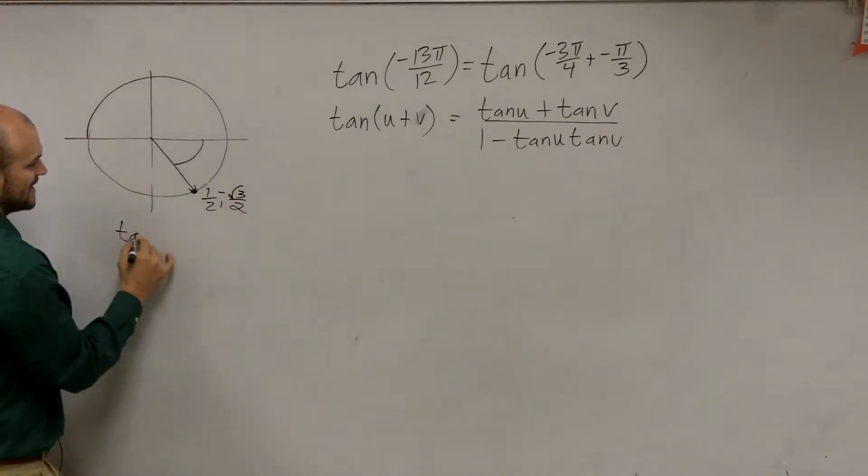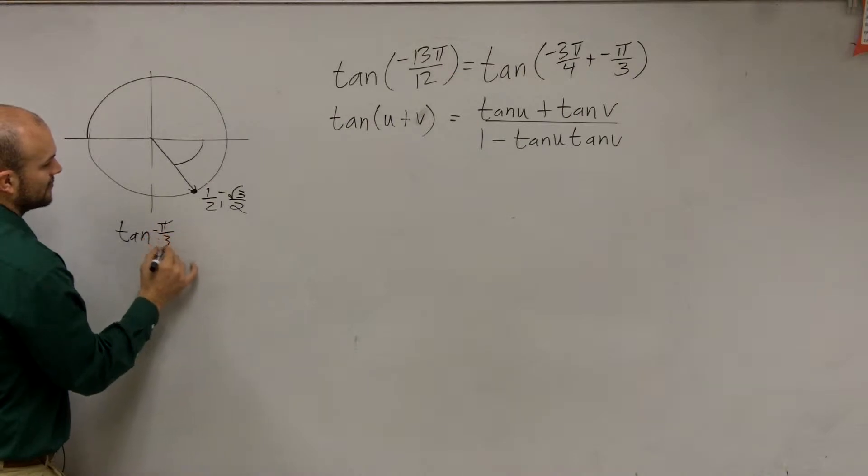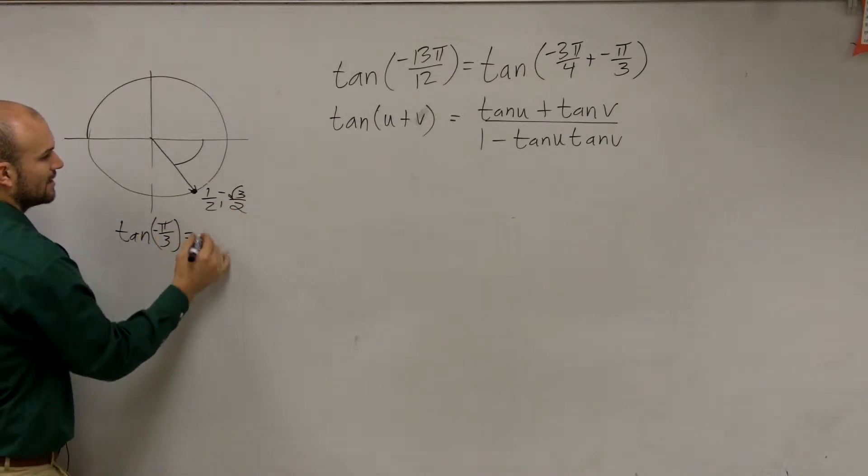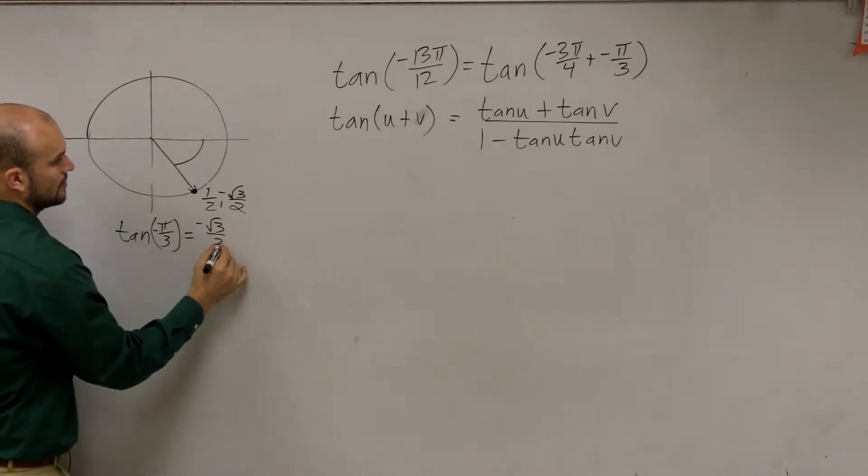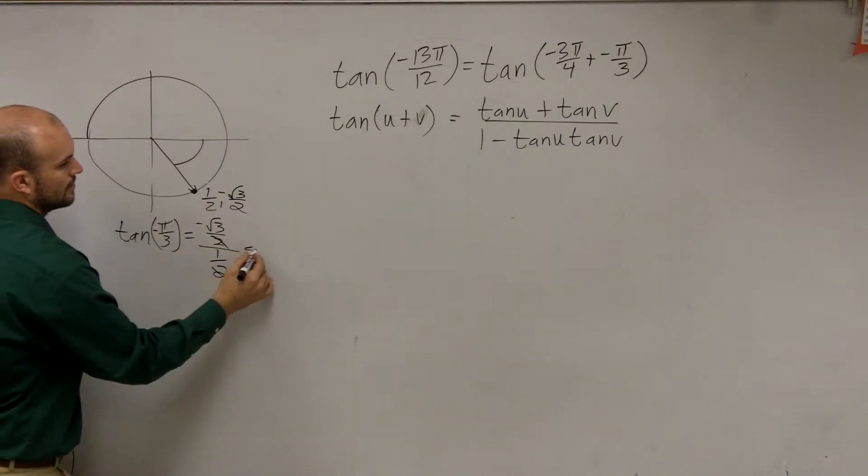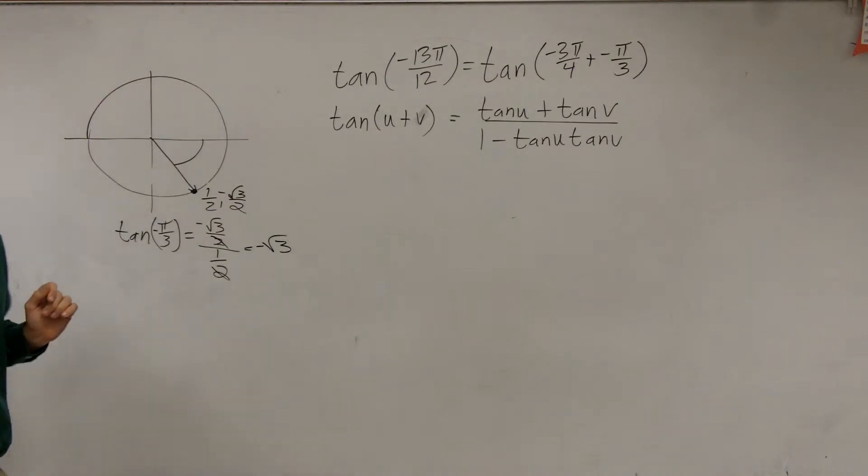To find the tangent of that angle, tangent of negative π over 3 is going to be the y-coordinate over the x-coordinate, which will be negative square root of 3.